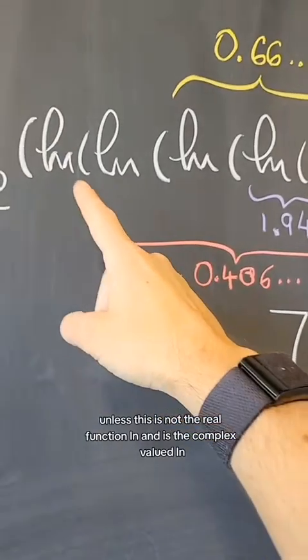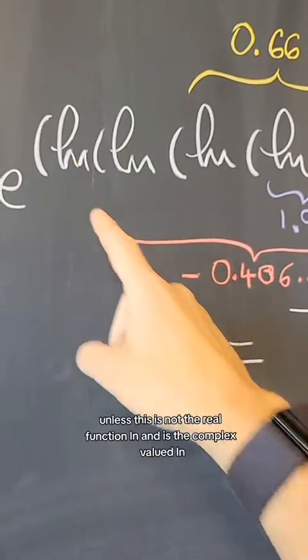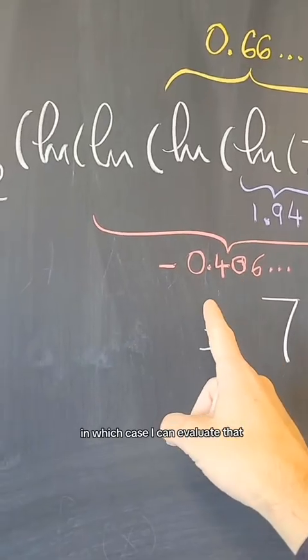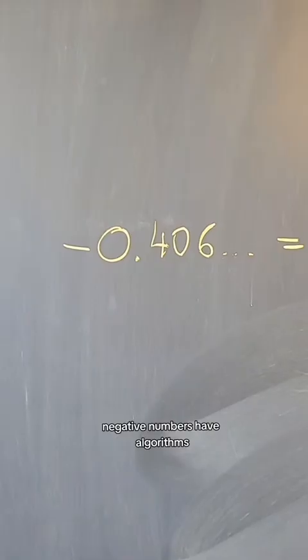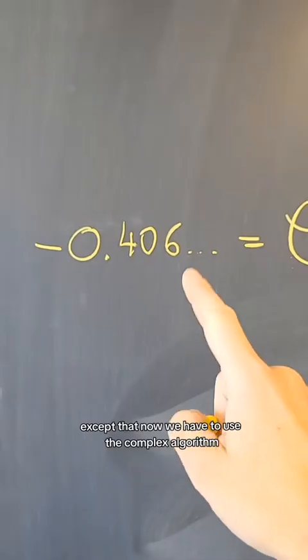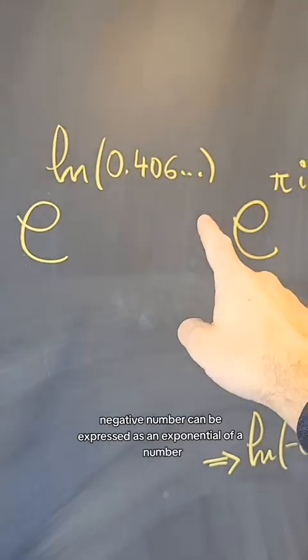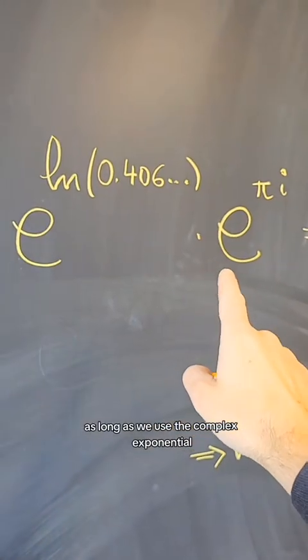Unless this is not the real function ln and is the complex valued ln. In which case, I can evaluate that. Negative numbers have logarithms, except that now we have to use the complex logarithm. In other words, a negative number can be expressed as an exponential of a number as long as we use the complex exponential.